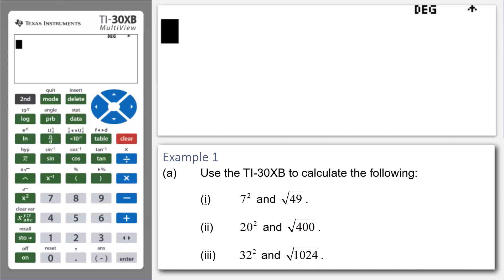Let's have a look at our first example. Our first example is asking us to use a calculator to establish a link between squared numbers and square roots. Here, we're going to use the TI-30XB to calculate the following.